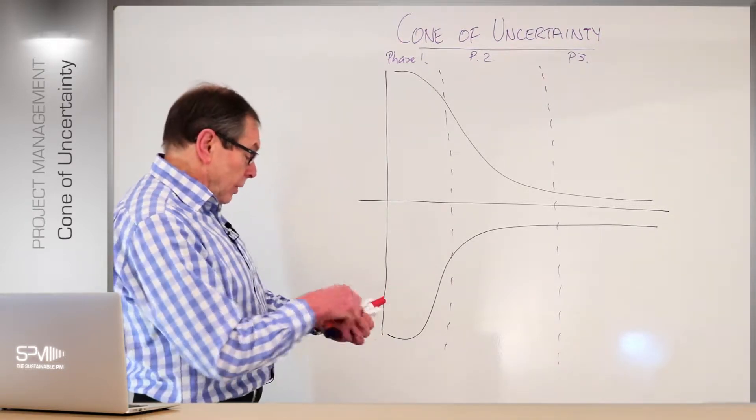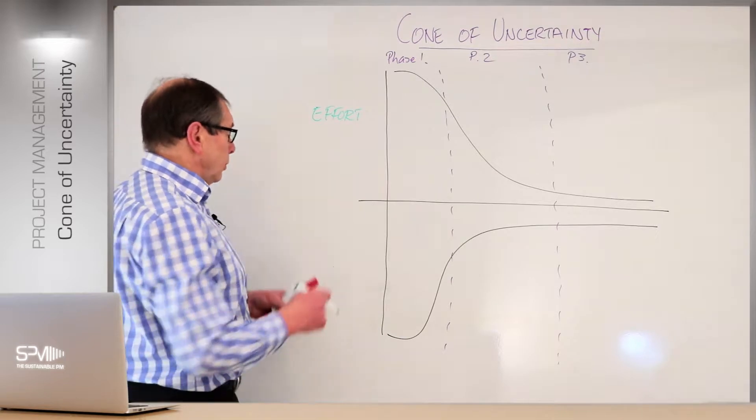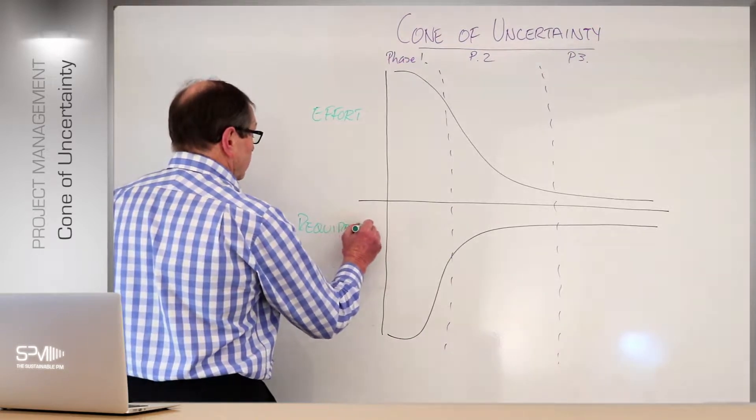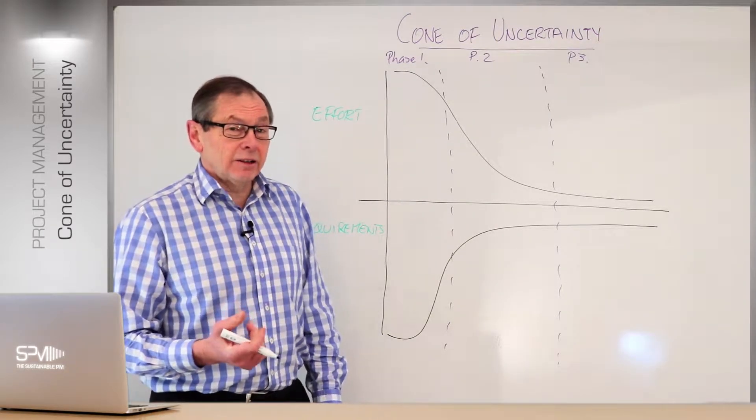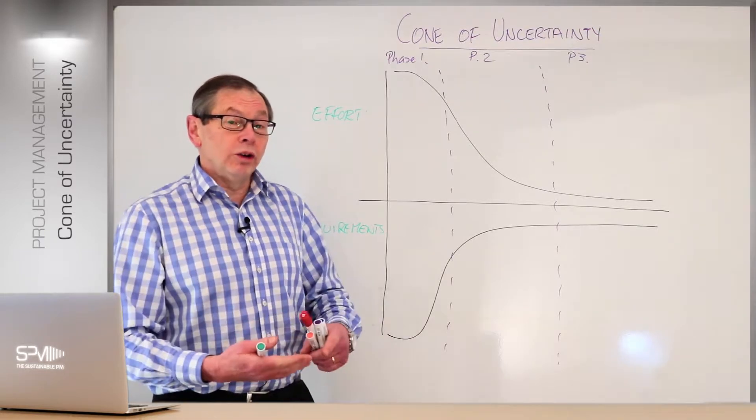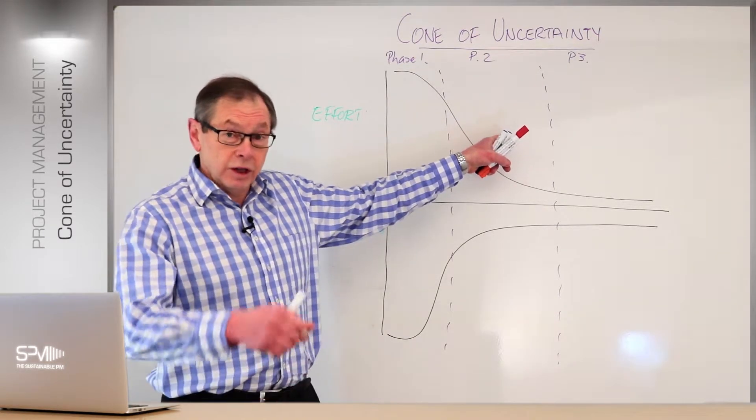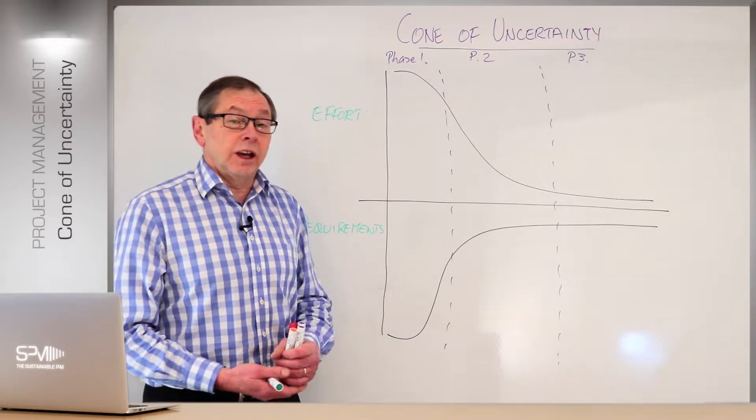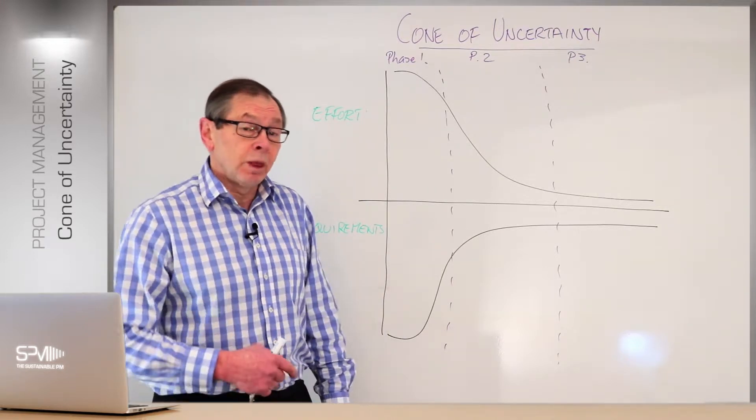What we have in the top half of this graph is the effort. This cone is going to help us understand the effort against the requirements we have. What it starts to explain is understanding why we estimate. We're projecting ourselves into the future and it's uncertain. We can only estimate how long it's likely to take and how much it's going to cost. Time is money - resources, people, environments.